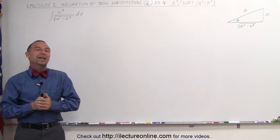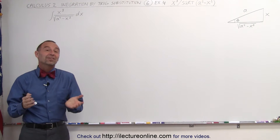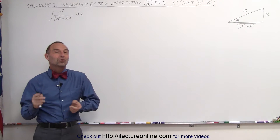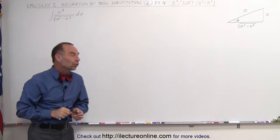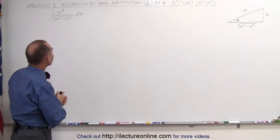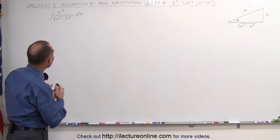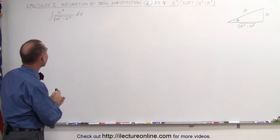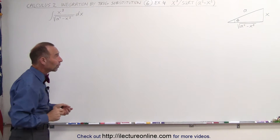Welcome to Electron Line. Here's our next example of how to use trig substitution to solve an integral. In this case, we have x cubed divided by the square root of a squared minus x squared.